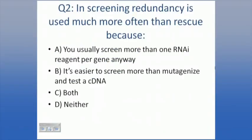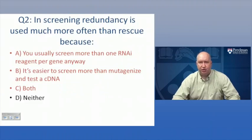In screening, redundancy is used much more often than rescue because - A, you usually screen more than one RNAi reagent per gene anyway; B, it's easier to screen more siRNAs than to mutagenize and test a cDNA; or C, both. The answer is both. You usually screen more than one siRNA pair anyway, and it's easier to screen more siRNAs than to mutagenize and test a cDNA. Unless you're screening double-stranded RNAs targeting essentially the whole message, typically you screen more than one independent siRNA.